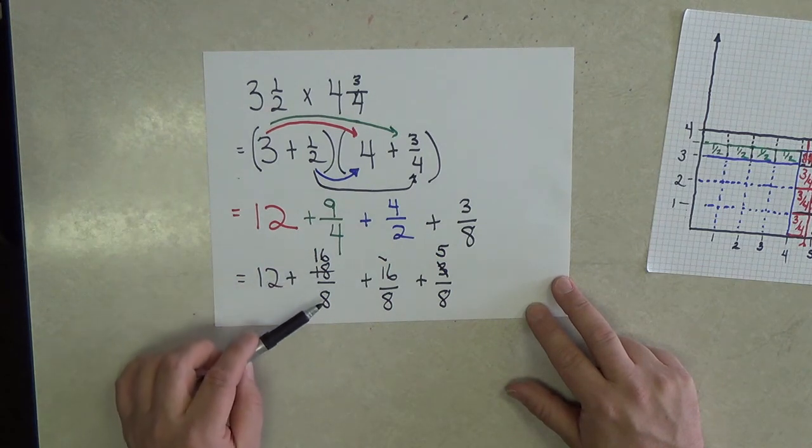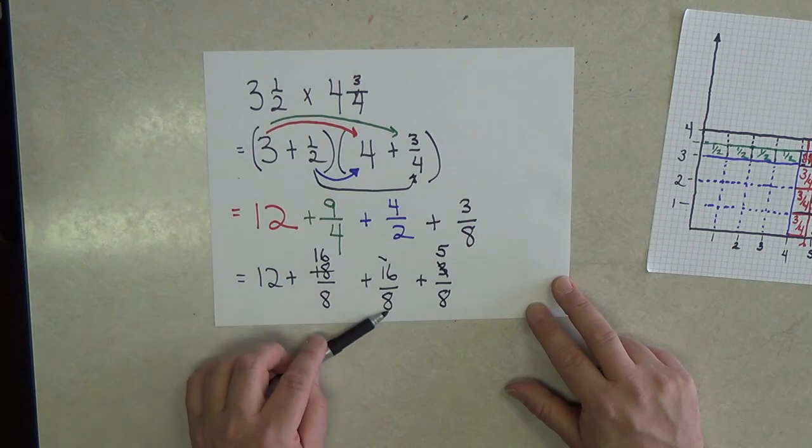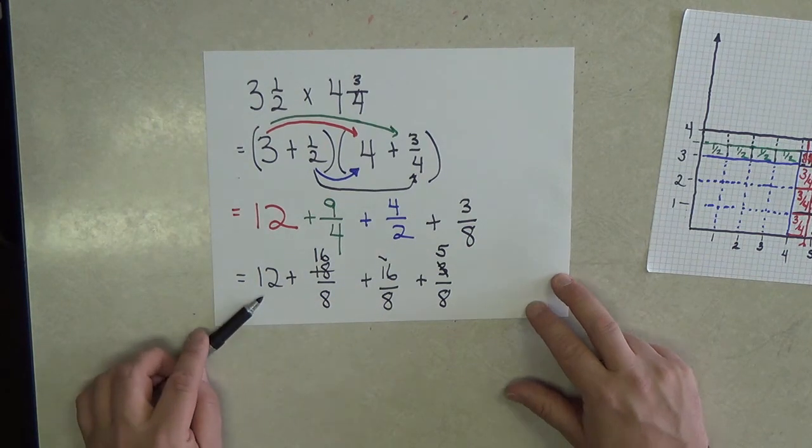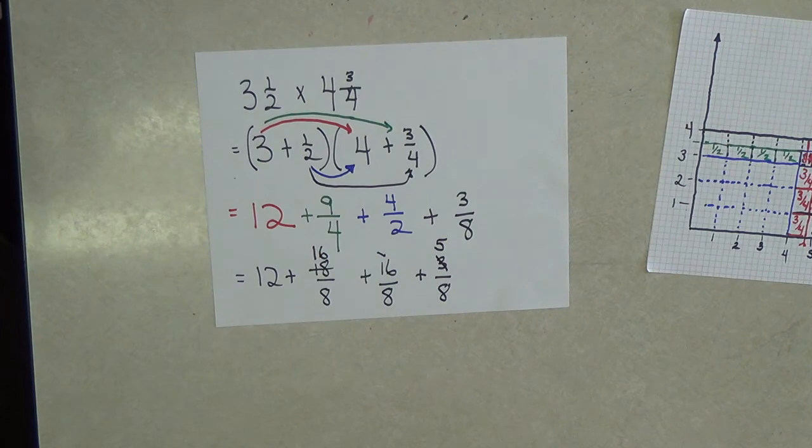I now know 16 over 8 is 2. So I have 2 and 2 is 4. 4 added on to 12 is 16.